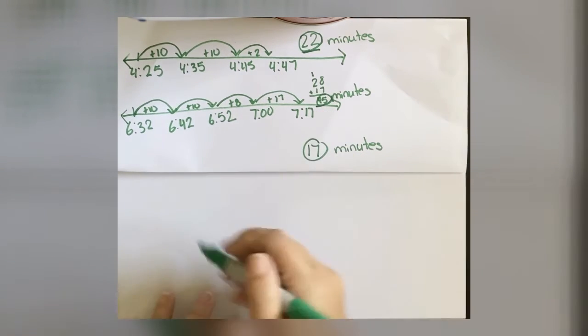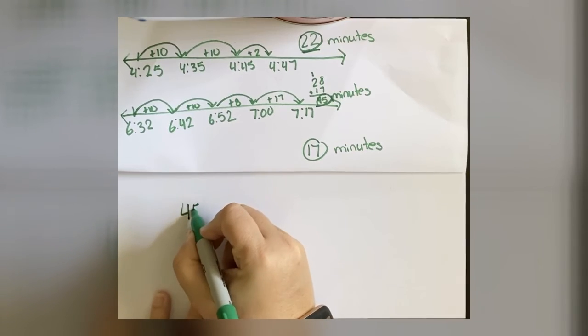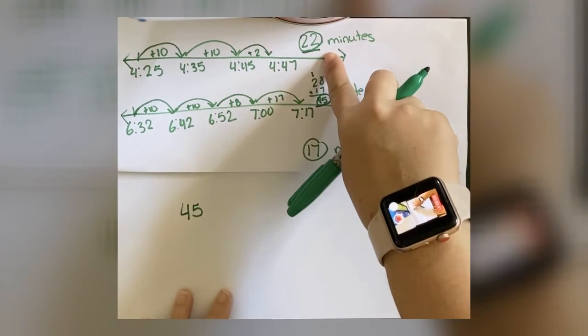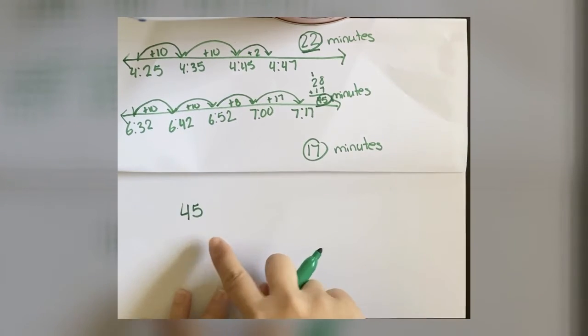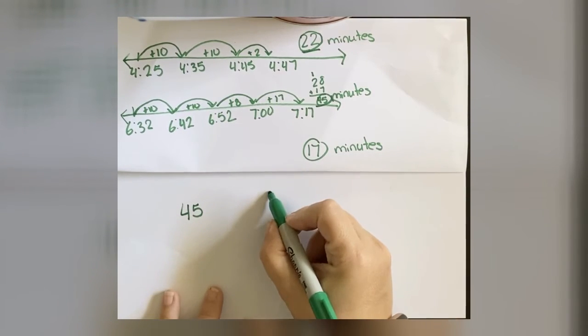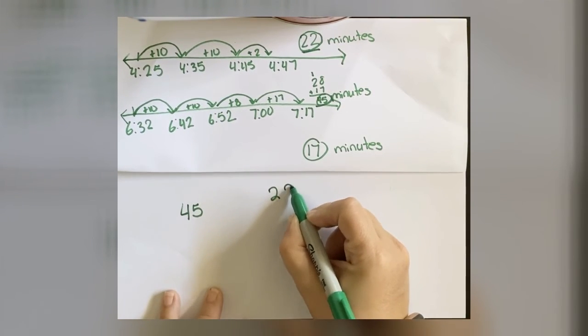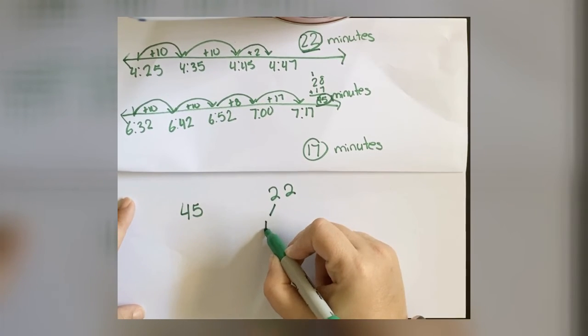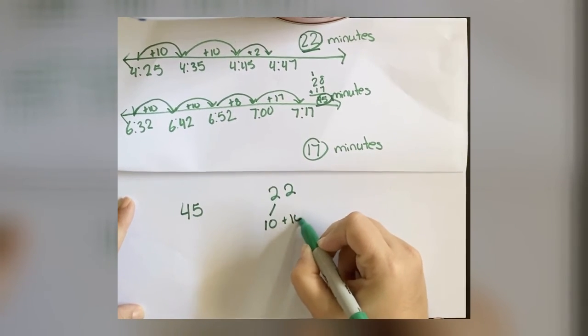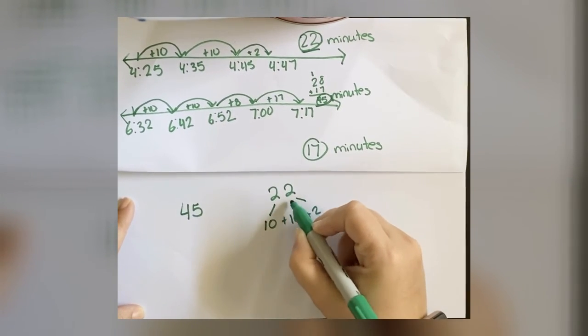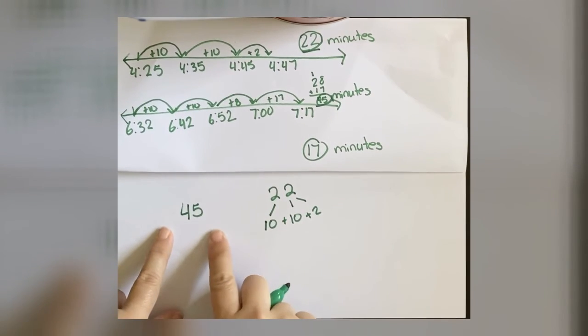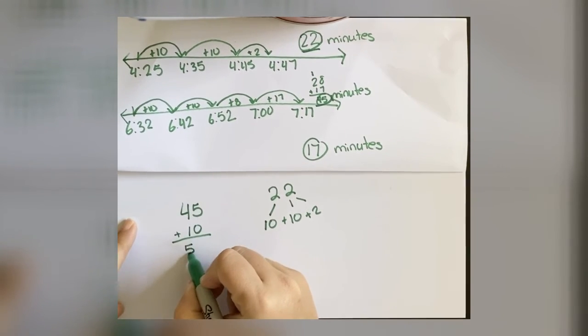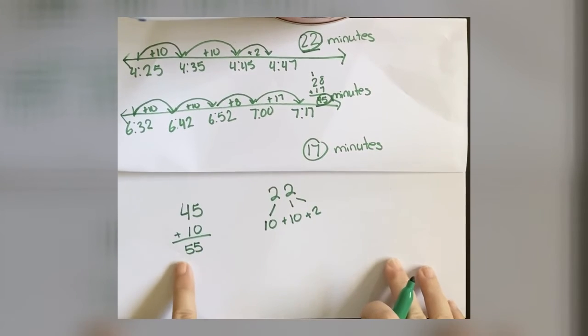I'm going to start with 45 minutes because it's the largest number that I have. I'm going to add 22 to this. However, in order to do that, I'm going to break 22 down into 10, 10, and 2.